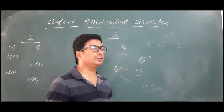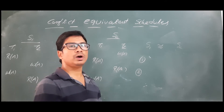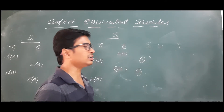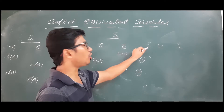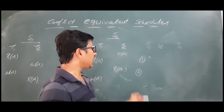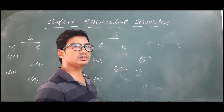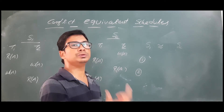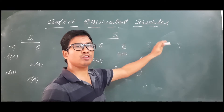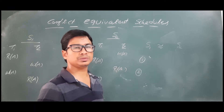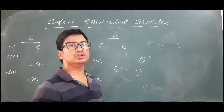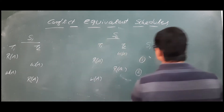If they are satisfying the two conditions, then I can say that they are conflict equivalent schedules. What are the two conditions? The first condition says that the number of conflict operations in both the schedules should be the same. And the second one is that the order should also be the same. So the first one is that the number of conflict operations in both the schedules should be same and the order of them should also be same.